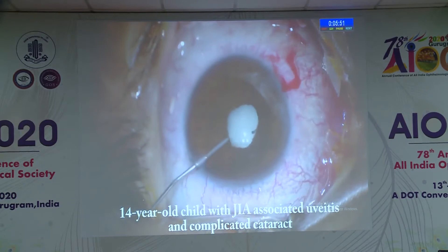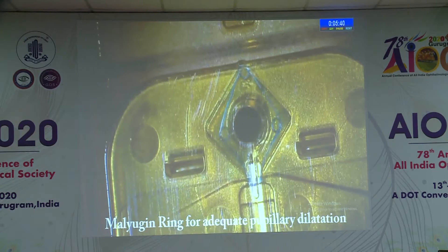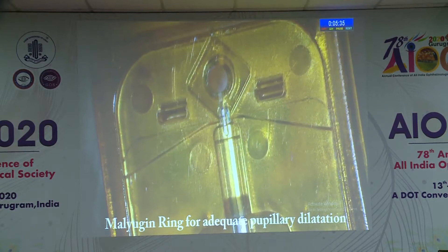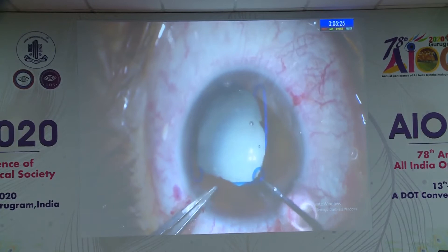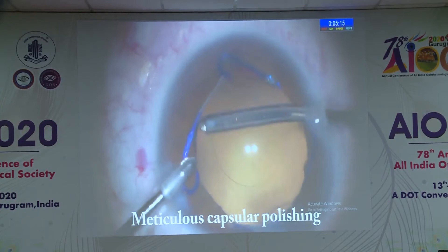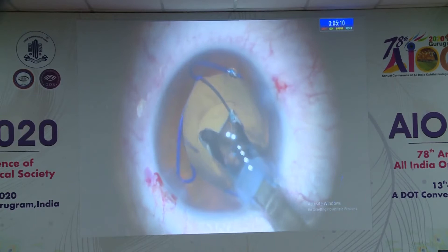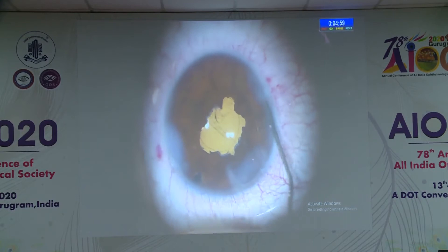This is juvenile idiopathic arthritis with cataract and total posterior synechiae. Ideally we should put the Malusine ring or Berger ring. This case was done about five to six years back so only the Malusine ring was available. Application of the Malusine ring was followed by staining and continuous curvilinear capsular axis, then implantation - even a single piece IOL or small peripheral IOL was used in this case.